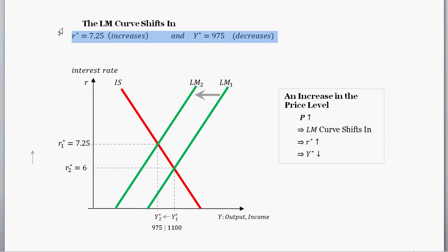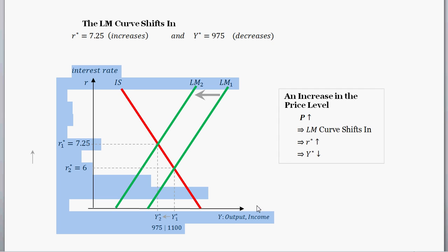So what's happened? We had the price level increase. And that was reflected with an inward shift of the LM curve. And what was the result of that? Well, we found R star went up to 7.25. It increased from 6 to 7.25. And Y star decreased from 1100 down to 975.